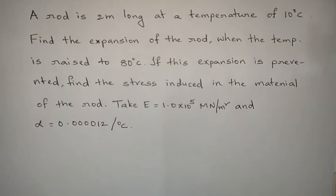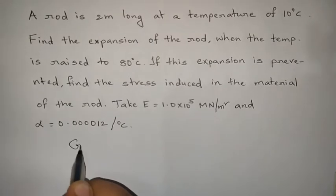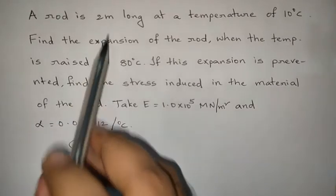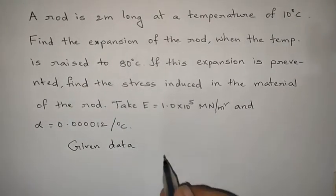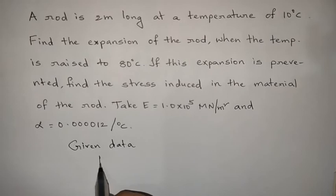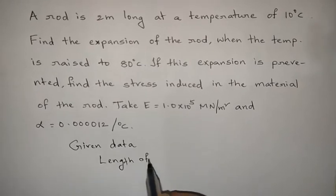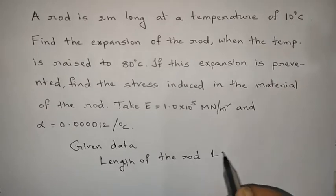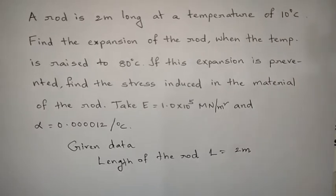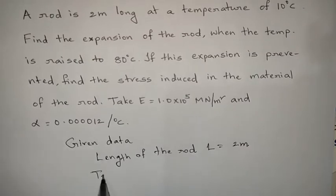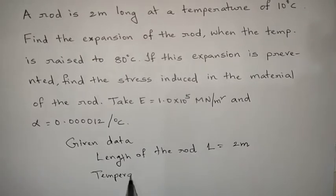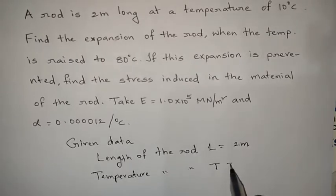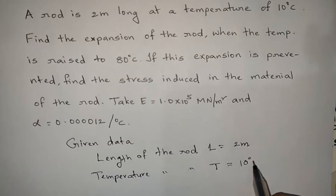So first of all, let us write the given data. The length of the rod is denoted by the letter capital L and that equals 2 meters. Next, the temperature of the rod is denoted by the letter T, that equals 10 degrees centigrade.